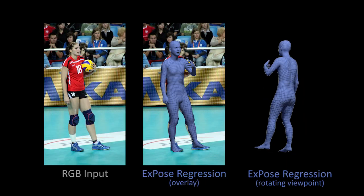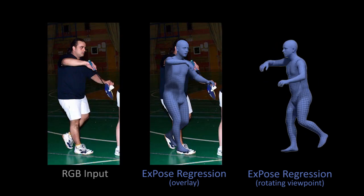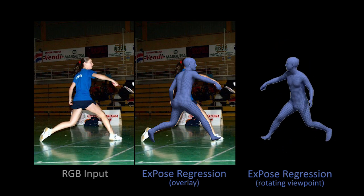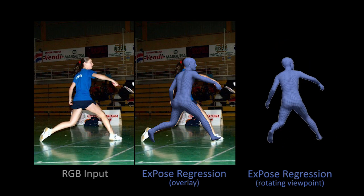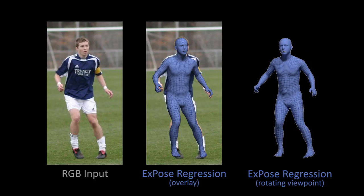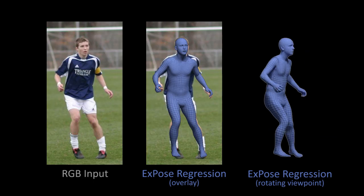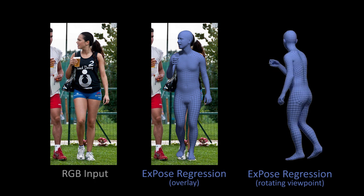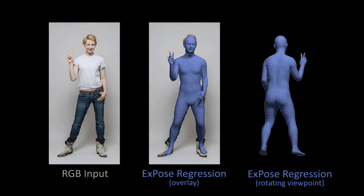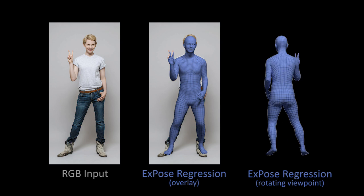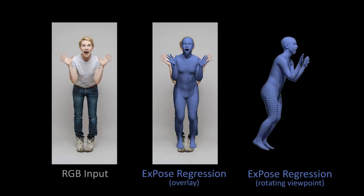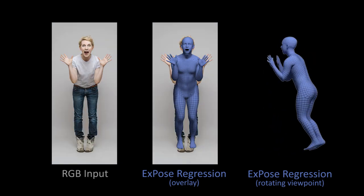EXPOSE does not rely on intermediate features and operates directly on image pixels at 5 frames per second. Here, we see examples of EXPOSE predictions on several in-the-wild images. For each estimated body, we show various viewpoints for clarity. We also demonstrate results for expressive images of humans found on the web. These include a wide variety of hand gestures and facial expressions.